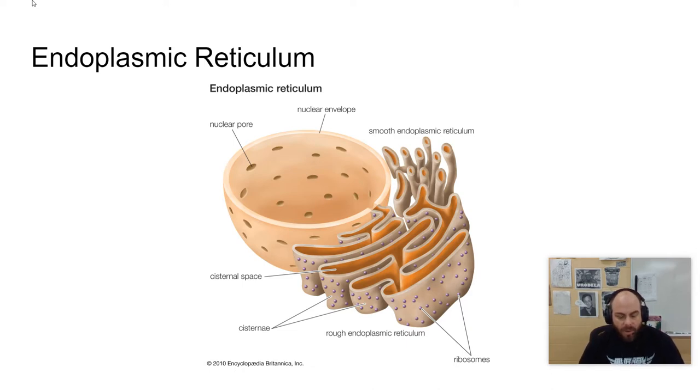So endoplasmic reticulum as a whole is a network of membrane tubes within the cytoplasm of eukaryotic cells, only found in eukaryotic cells. You can see how the endoplasmic reticulum connects directly to the nucleus and kind of forms this network of passageways directly connected to the nucleus. There are two kinds of ER or endoplasmic reticulum. The rough ER is there seen with the ribosomes on it. That's where it gets its name, rough ER.